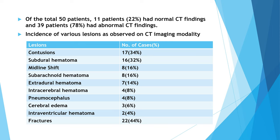Incidence of various lesions as observed on CT imaging: contusions seen in 17 cases, subdural hematoma in 16 cases, midline shift in 8 cases, subarachnoid hematoma in 8 cases, extradural hematoma in 7 cases, intracerebral hematoma in 4 cases, pneumocephalus in 4 cases, cerebral edema in 3 cases, intraventricular hematoma in 2 cases, and fractures in 22 cases.